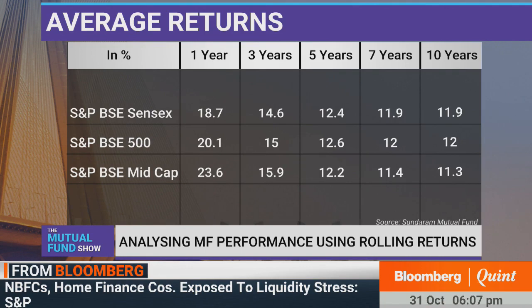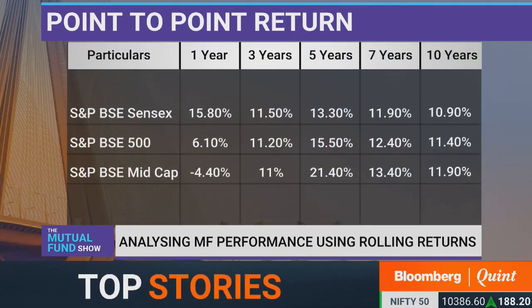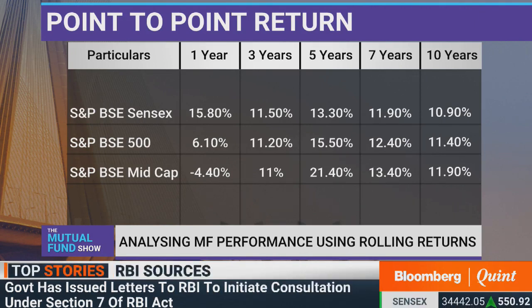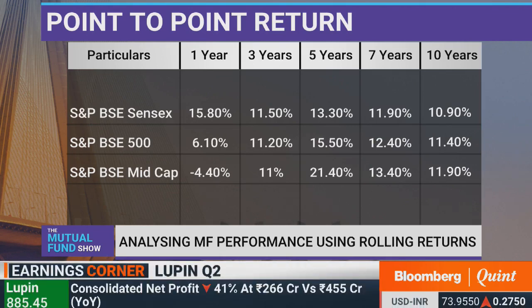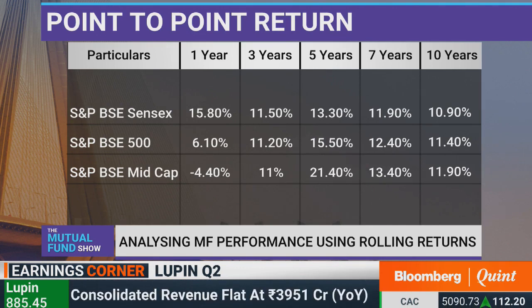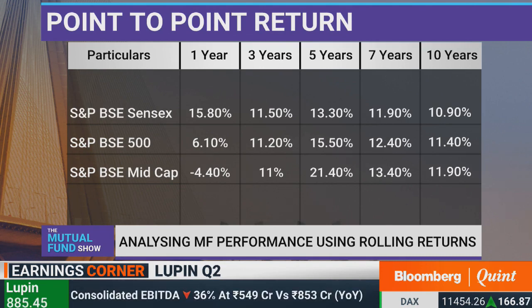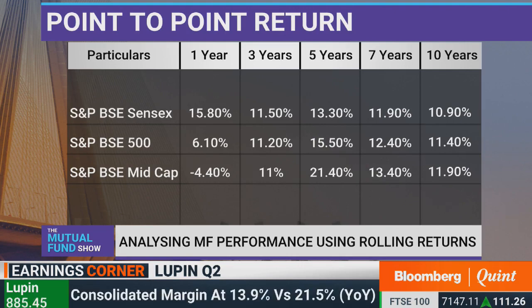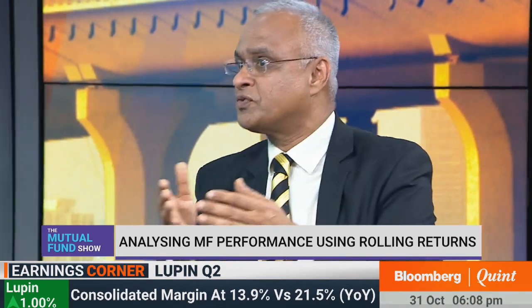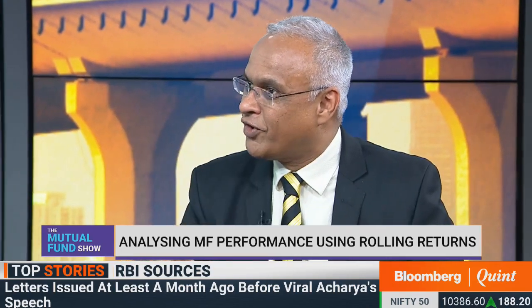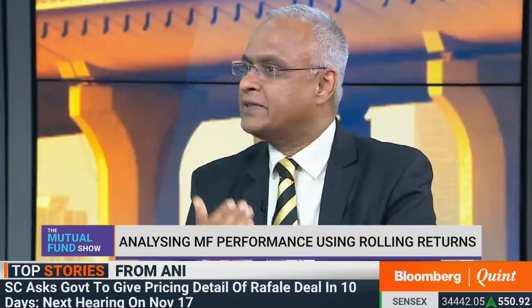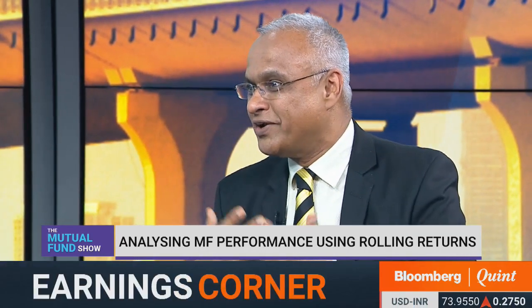If you look at point-to-point returns, last one year the mid-cap index gave a negative return, so investors say they don't want to reinvest. But over seven years it gives 13.4%. Using the immediate past to predict the future is very flawed — it leads to disenchantment with first-time investors who thought last year gave 15% and this year gave negative 40%. Rolling returns sensitizes you: there's a 20% probability of loss on a one-year Sensex investment, so your preparedness for the result also improves.